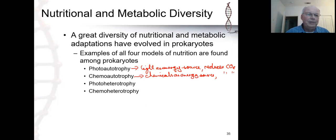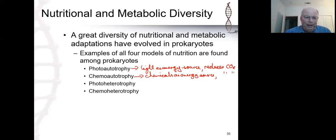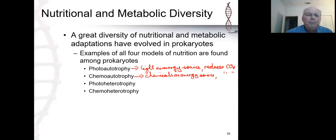Chemoautotrophs would be bacteria or archaea living around thermal vents in the deep ocean, tapping into chemicals coming out in the hot water — specifically H₂S, hydrogen sulfide. We'll look at a list of various electron donors and electron acceptors that can be used. In many cases they give rise to different forms of anaerobic respiration that looks like aerobic respiration except oxygen is not the final electron acceptor. Other chemicals serve as electron acceptors, but you have a full cell respiration pathway — it just does not require oxygen.